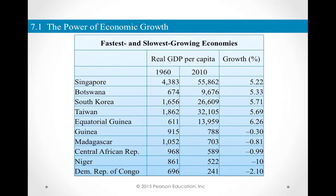Looking at the fastest and slowest growing economies: the fastest growing economies — Singapore, Botswana, South Korea, Taiwan, and Equatorial Guinea — grew at approximately 5.5% on average, leading to a phenomenal increase in standard of living based on real GDP per capita. But the slowest growing economies — Guinea, Madagascar, Central African Republic, Niger, and Democratic Republic of Congo — each grew at negative rates, so real GDP per capita actually declined from 1960 to 2010.